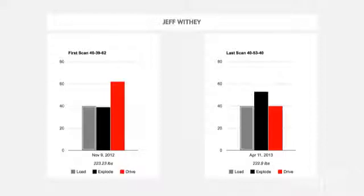Jeff Withey started off as a volleyball player out of San Diego. He was a highly recruited Division I basketball player who transferred to us from Arizona. That first graph shows me that he's a volleyball player — one that likes to overcome gravity. He's a hip-dominant athlete, so Jeff didn't like to bend his ankles and knees very well.